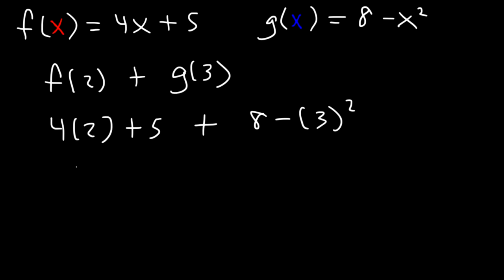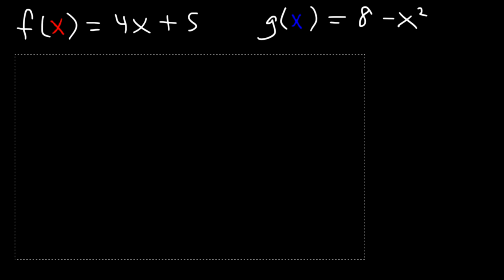And then let's add 4 times 2 is 8, and 3 squared is 9. 8 plus 5 is 13. 8 minus 9 is negative 1. 13 minus 1 is 12. So that's the value of f of 2 plus g of 3. You just find the two values, and you add them. Let's try another example.